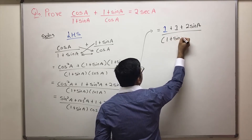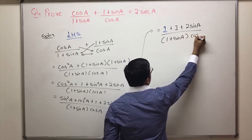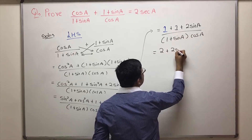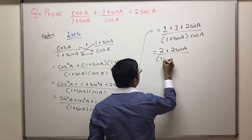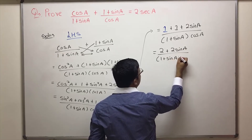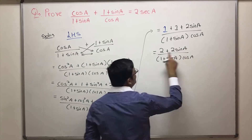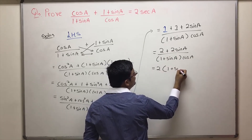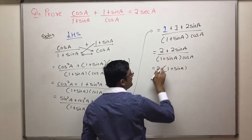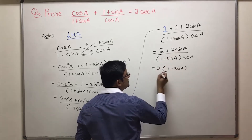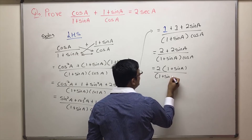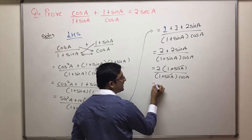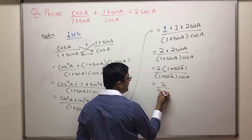1 plus sin A multiplied by cos A. So 1 plus 1 is 2, giving us 2 plus 2 sin A upon 1 plus sin A into cos A. Now from these two terms I can take 2 common, so we get 2 times (1 plus sin A) upon 1 plus sin A into cos A. The (1 plus sin A) terms cancel.